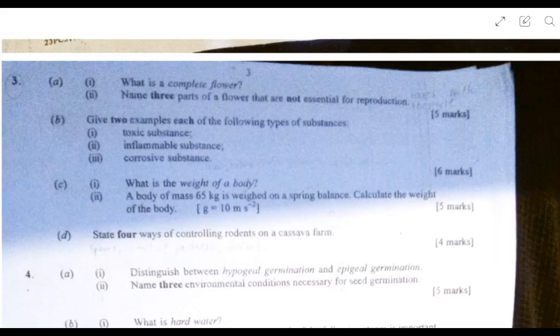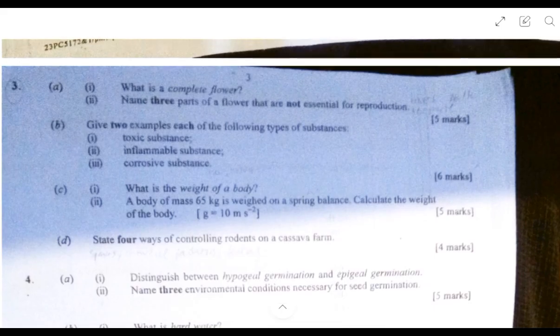What is a complete flower? A complete flower is a flower that has all the floral organs. The floral organs are sepals, petals, stamen, and carpels. The stamen and carpels are the reproductive parts. Name three main parts of the flower that are not essential for reproduction. Definitely the sepals and petals come in. Then you have the receptacle, which is the tip of the flower stalk, and the nectaries, the structures that produce the nectar.